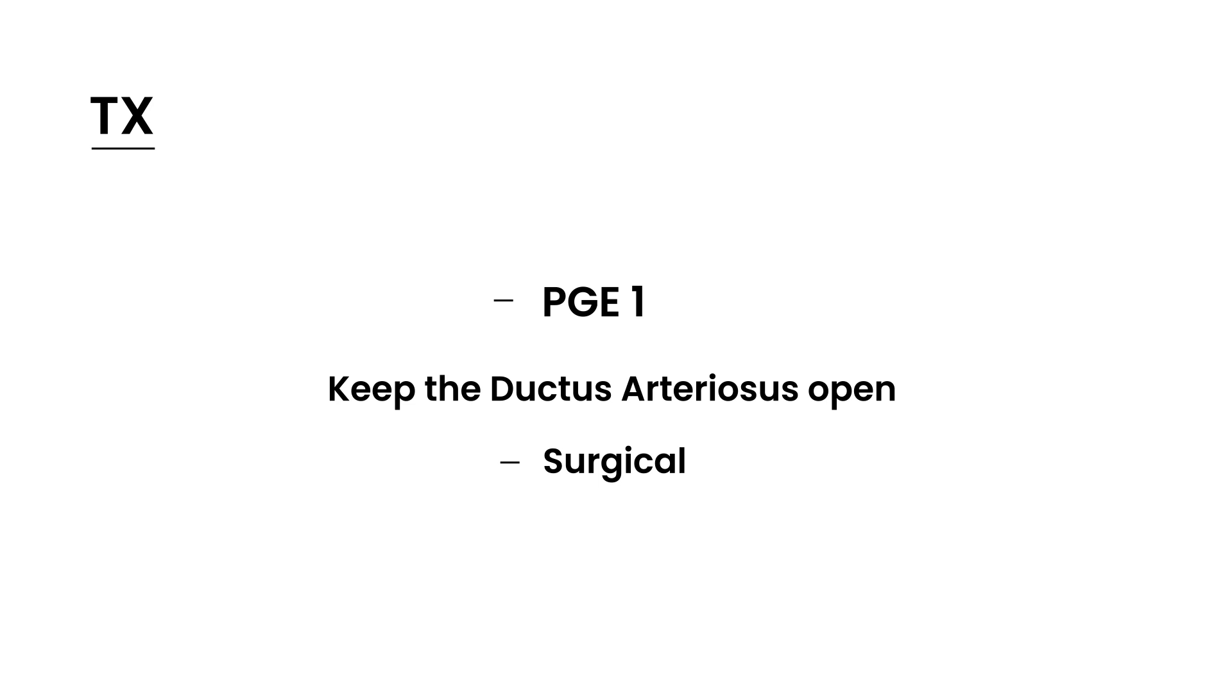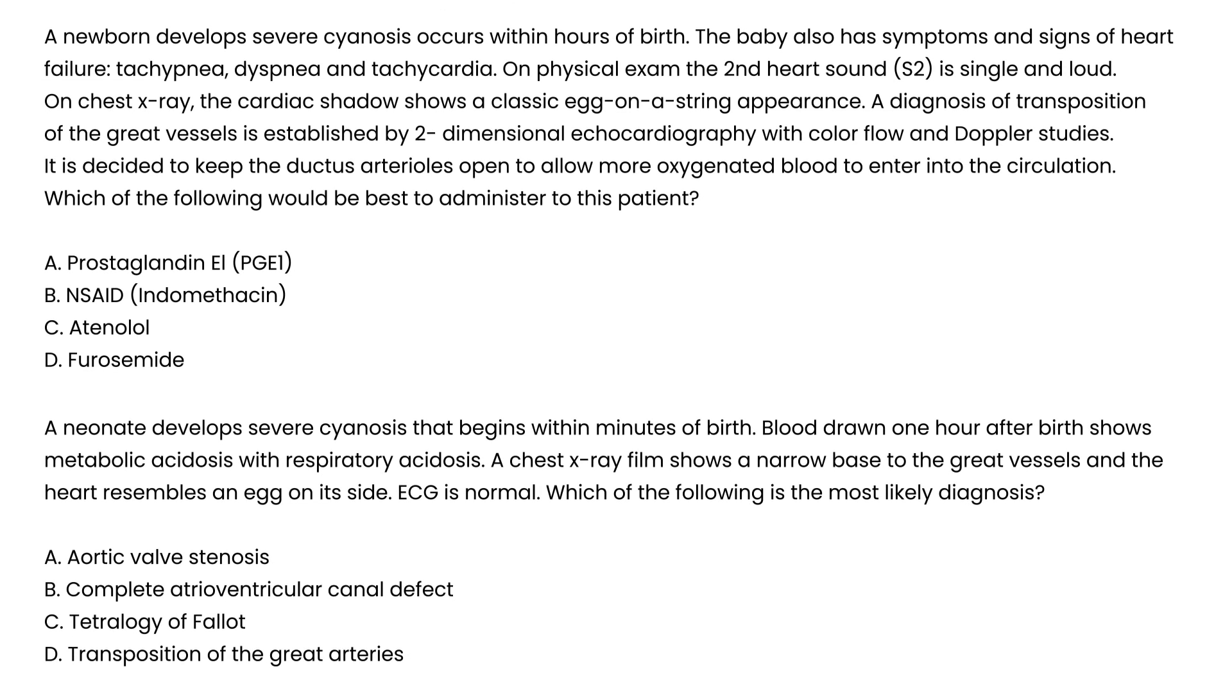Let's look at a couple of vignettes. A neonate develops severe cyanosis that begins within minutes of birth. Blood drawn one hour after birth shows metabolic acidosis with respiratory acidosis. Chest x-ray shows a narrow base to the great vessels and a heart resembles an egg on its side. EKG is normal. Which of the following is most likely diagnosis? This is a clinical vignette that is basically describing transposition of the great vessels.